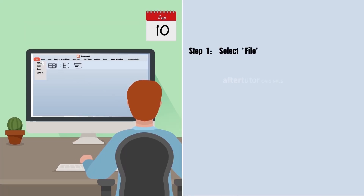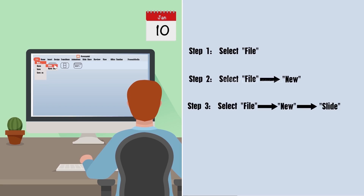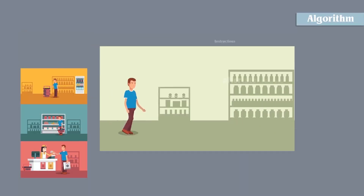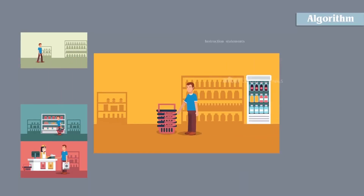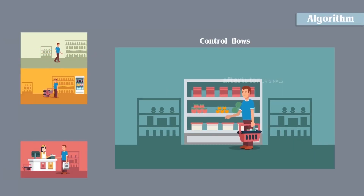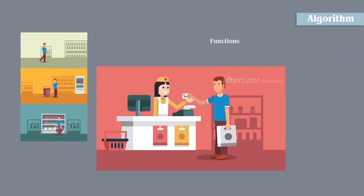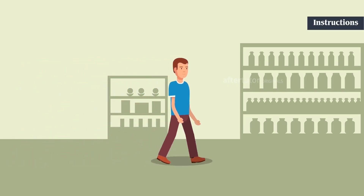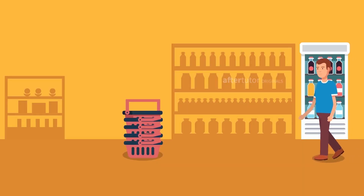In terms of computer science, algorithms are similar to real life scenarios by which you provide a set of instructions to your computer to achieve a certain task. Algorithms contain a set of instructions in terms of instruction statements, control flows, and functions.